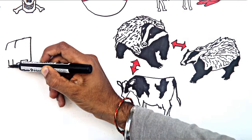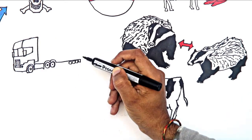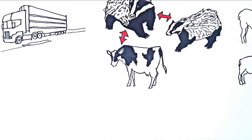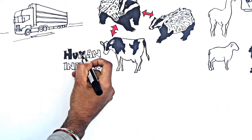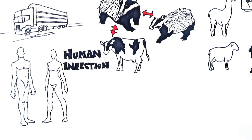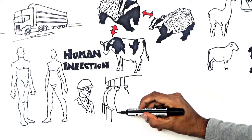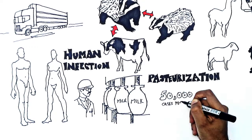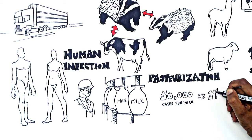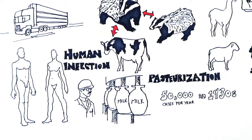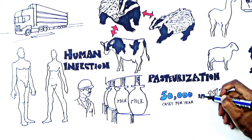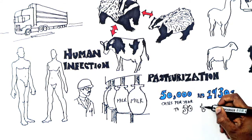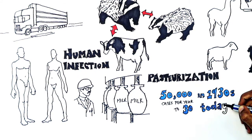Animal transport can also spread bovine TB over long distances. Human infection is possible, but since the introduction of milk pasteurisation, the number of human cases has dropped dramatically, from 50,000 per year in the 1930s to around 30 cases per year today.